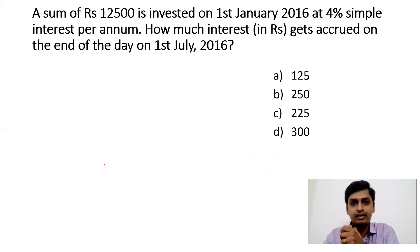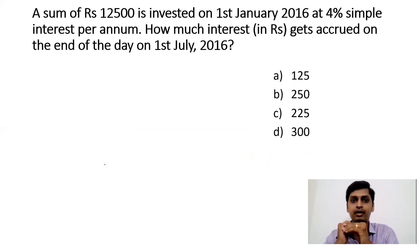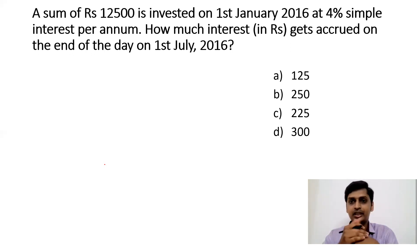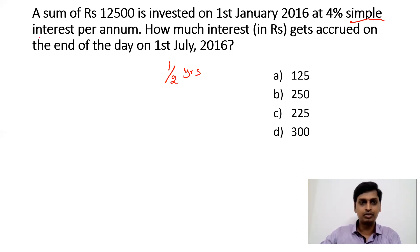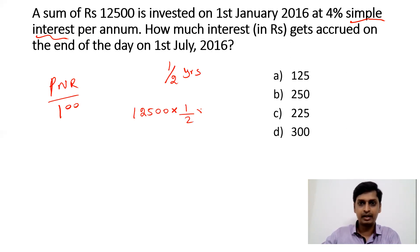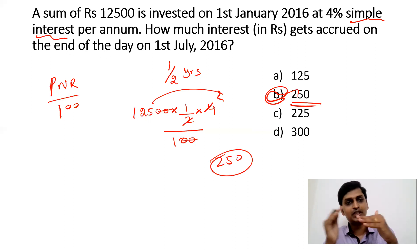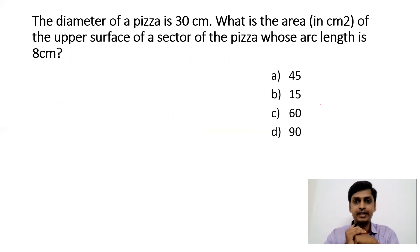Question seven: a sum of ₹12,500 is invested on 1st January 2016 at 4% simple interest per annum. How much interest accrues by 1st July 2016? From January to July is 6 months, which is half a year. Simple interest = PNR/100 = 12,500 × (1/2) × 4 / 100. Cancelling zeros: 125 × 2 = ₹250. So the simple interest is ₹250.